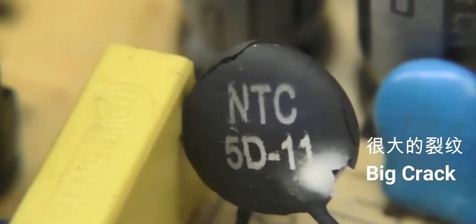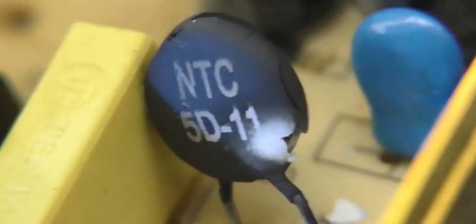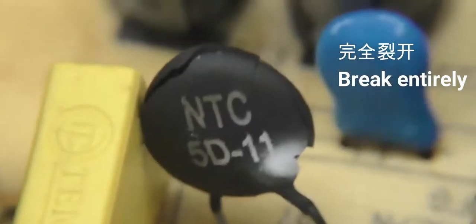That is an NTC, so that's what's used for inrush current limiting. And you can see there we have giant cracks in it, a nice white mark on the bottom. So that's what was arcing over.